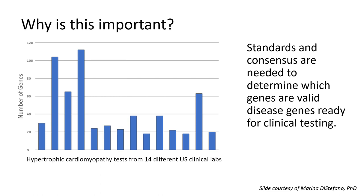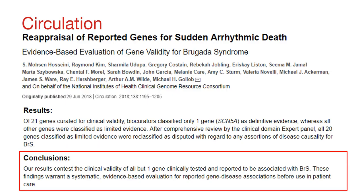Here you can see just one example of this — a sampling of the wildly different numbers of genes included on hypertrophic cardiomyopathy testing panels across 14 different laboratories in the United States. Once people started really considering how sure we are that the genes we're testing for are truly disease-causing, we found some interesting results. One extreme example comes from the ClinGen Brugada syndrome gene curation expert panel. Over the years, more than 20 different genes had been proposed to cause Brugada syndrome, an arrhythmia syndrome with a risk of sudden death. When the group carefully and systematically reviewed the evidence, they concluded that only one of them, SCN5A, was definitively associated with Brugada syndrome, and the rest were classified as disputed.